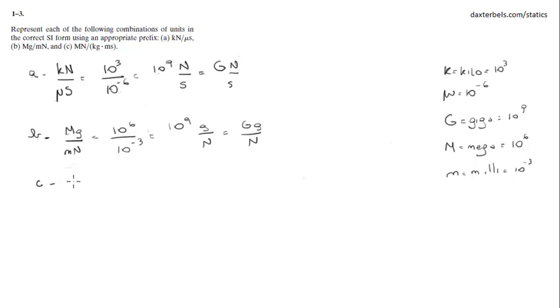Part C, meganewtons per kilogram per millisecond. Now, notice that the kilogram is already an SI unit. So you don't have to do anything with the kilogram. So meganewtons, M, as you can see on the right, is 10 to the 6 over the kilograms. We don't have to do anything, OK?